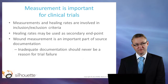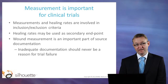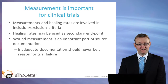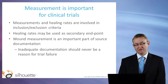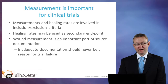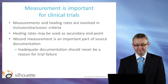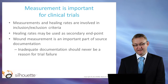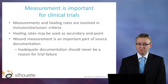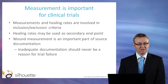So why is wound measurement so important for clinical trials? Well, the wound size is an important inclusion-exclusion criteria, and wound area is often used for this. Healing rates can be used either as a secondary or tertiary endpoint, and sometimes it's also calculated to remove rapid healers from a clinical trial. Wound measurement is an important part of source documentation, and there's no reason why any issues and difficulties with wound measurement should lead to difficulties with a clinical trial.